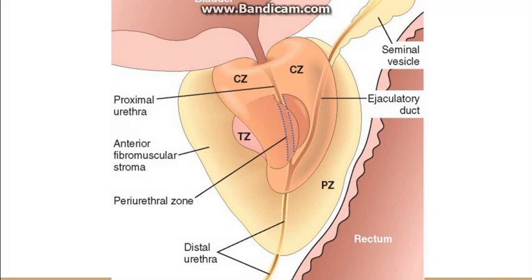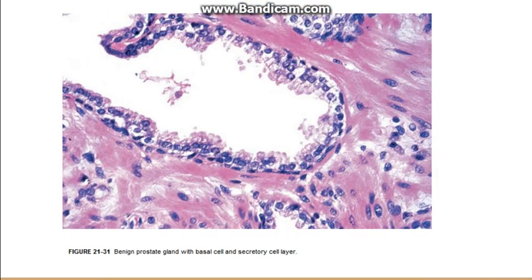Going to the histology of normal prostate. There is stroma, and then there are glands. These glands are lined by two layers of epithelium. There is a tall columnar layer of epithelium which lies over the low cuboidal epithelium — these are the basal cells.